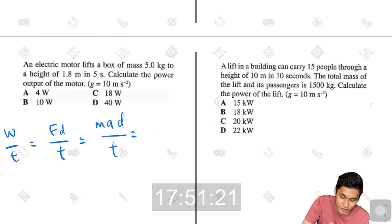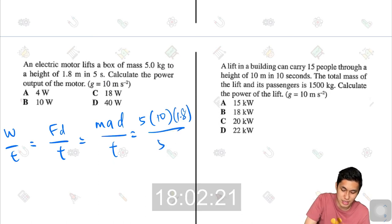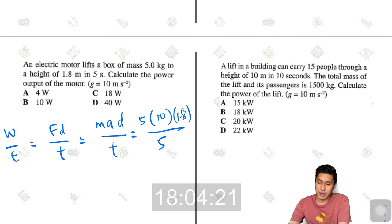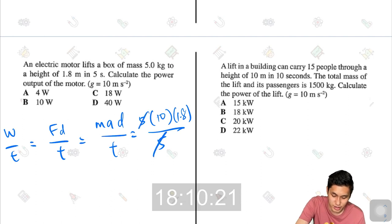Mass would be 5 kg. Multiplied by the acceleration, that's gravitational acceleration, 10. The distance, a height of 1.8 meters. In 5 seconds, so divided by 5. So I'll get 5 times 10. Oh, it's actually 10 times 18, because 5 and 5 will cancel each other off. So that would be C, 18 watts.